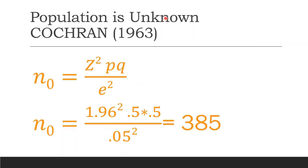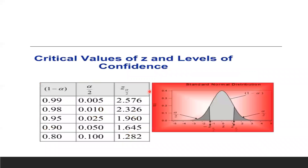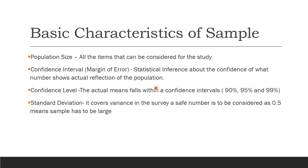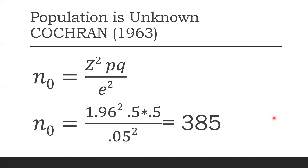Let's apply this formula at the 95% confidence level. The Z value is 1.96, so we square that. p is 0.5 and q is 1 minus 0.5, which is again 0.5. e is 0.05, meaning we are allowing 5% error. Standard deviation covers variance in the survey, and a safe number considered is 0.5. Putting all values in: n₀ = (1.96)² × 0.5 × 0.5 / (0.05)² = 385. So my sample size is 385.